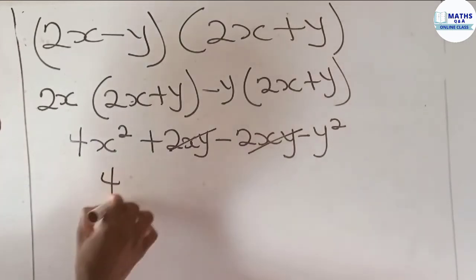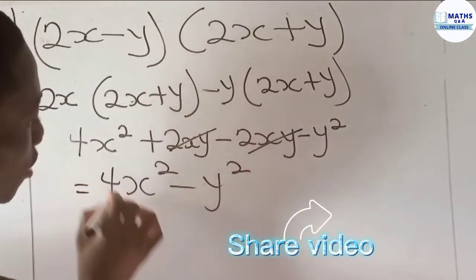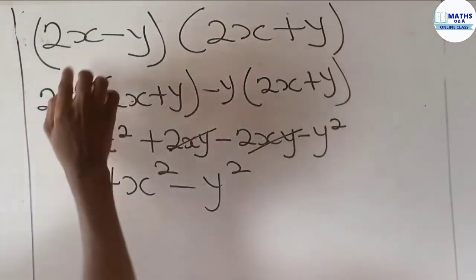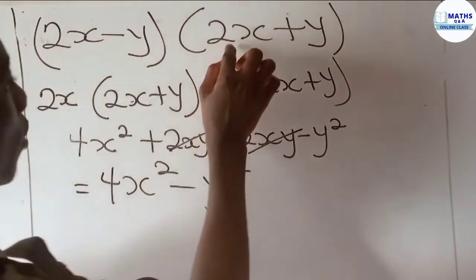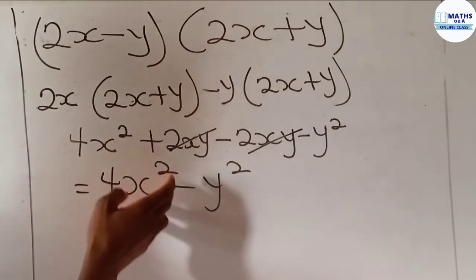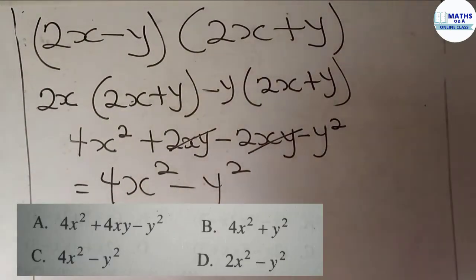(2x - y)(2x + y) - the answer is 4x² - y². So when you take the question, what do you think is the correct option? 4x² - y², and that answer is C.